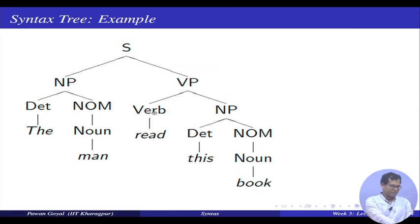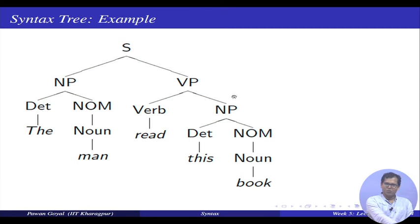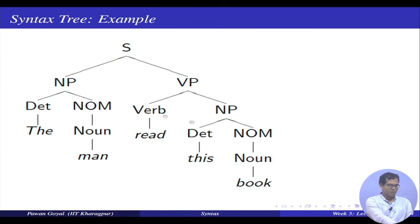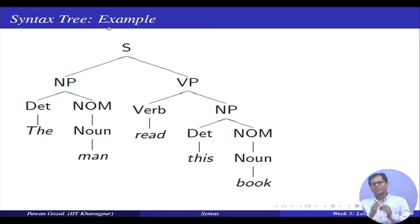Now we are going one level up. We are saying this is a determiner, this is a noun — they both together make a phrase, a noun phrase. So 'the man' is a noun phrase. Similarly, 'this book' is also a noun phrase. But when the verb 'read' comes before a noun phrase, it makes a verb phrase. All three words act as a single unit of a verb phrase. There is a unit for 'read this book' and 'the man'. Then a noun phrase and verb phrase together make the sentence. This gives me a complete hierarchical structure of how the words are arranged in the sentence.